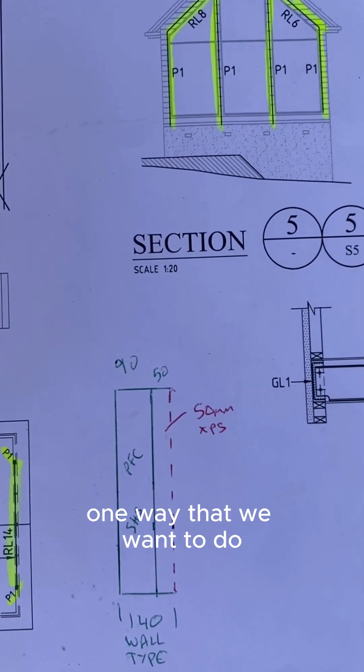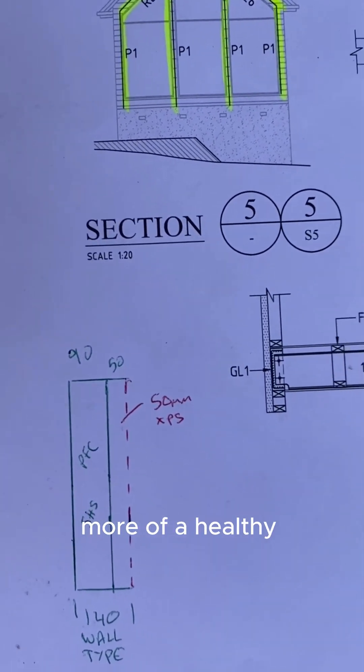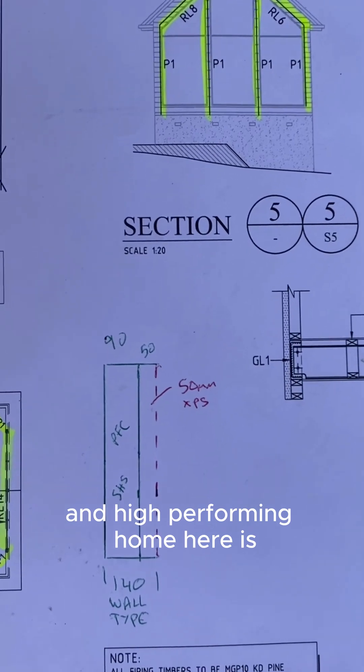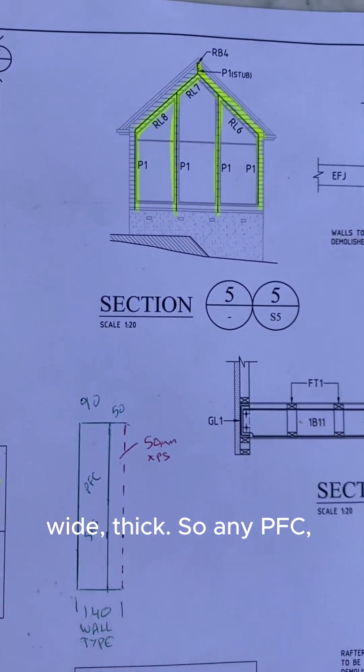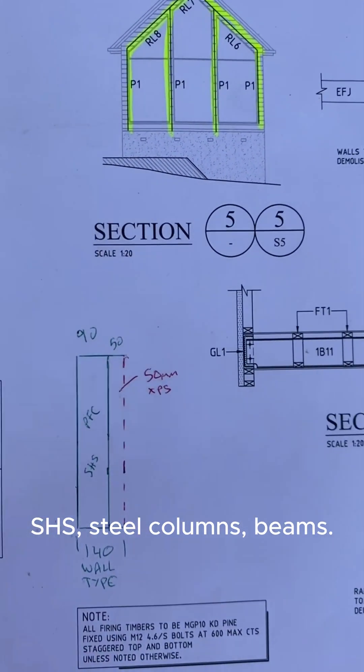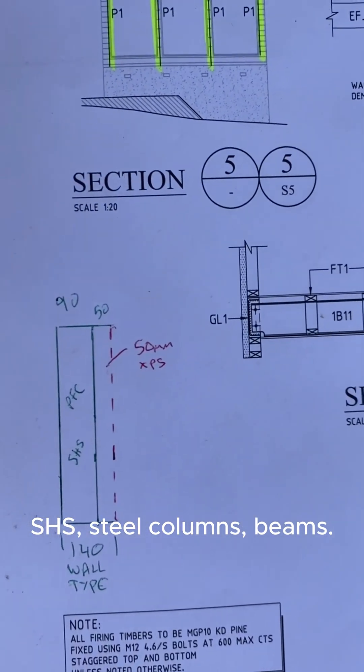One way that we want to do more of a healthy and high performing home here is, our steel is only 90mm wide, thick, so any PFC, SHS steel columns, beams.